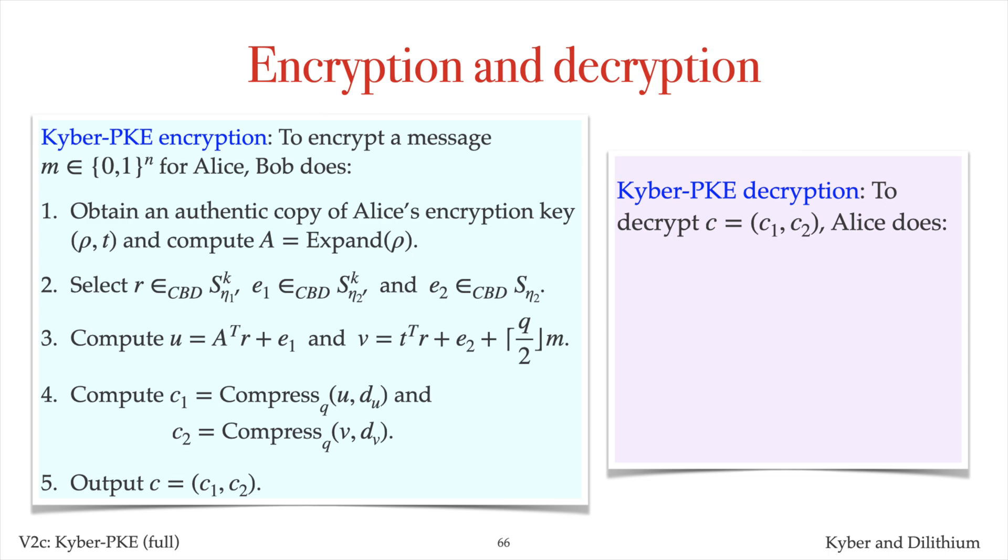To decrypt C, Alice uses her decryption key S as follows. First decompress C1 to U' and C2 to V'. Alice then computes the polynomial V' minus S transpose times U', rounds its coefficients, thus obtaining the message polynomial.